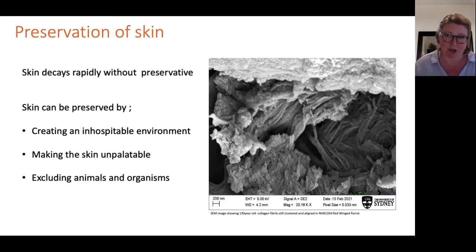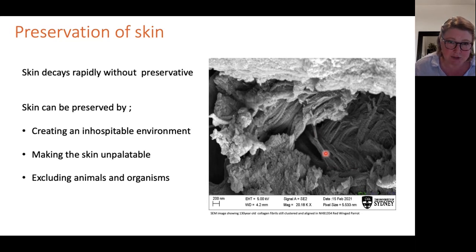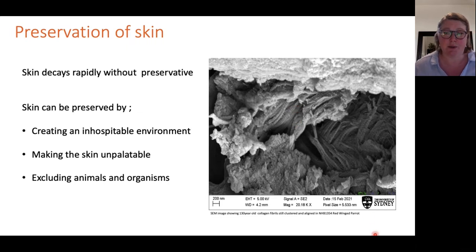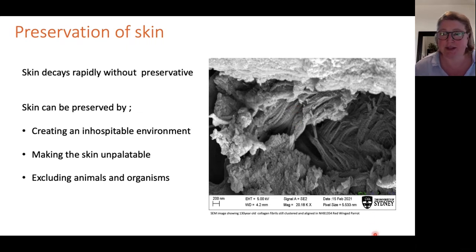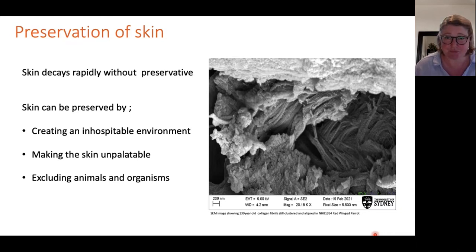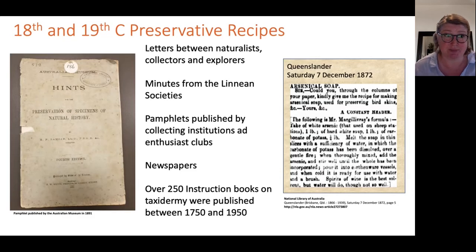Skin can be preserved by creating a local environment that's inhospitable to microorganisms, making the skin unpalatable, and excluding animals and insects as much as possible. When well done, skin can remain intact for centuries. This electron microscope image shows little bundles of collagen — a structural protein found in skin — still present after 130 years, in areas where the environment was restricted and not too much exposed to oxygen.